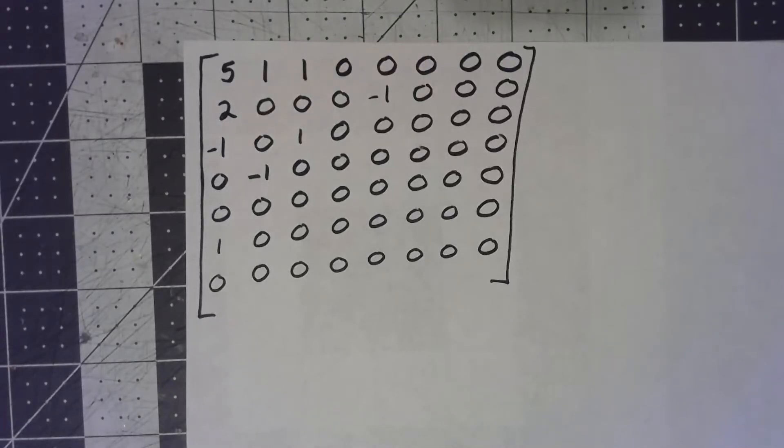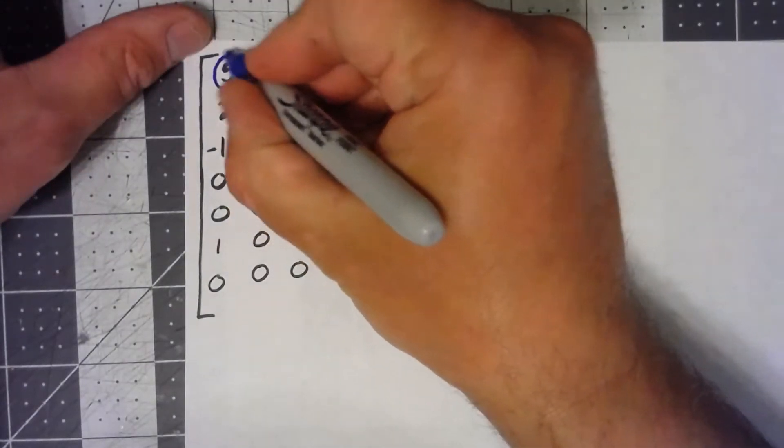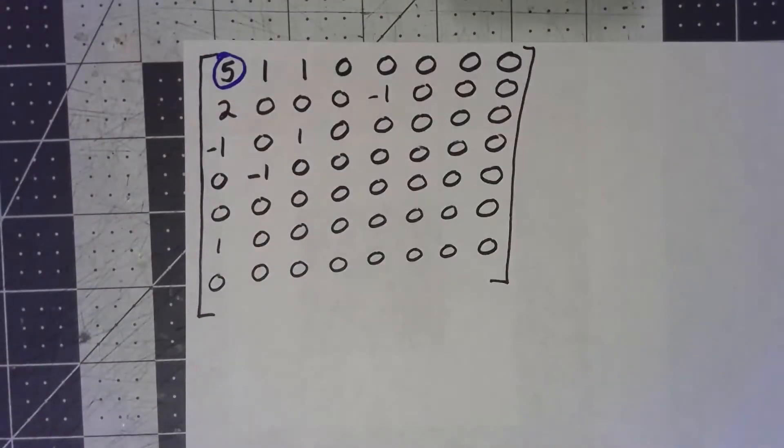In the last video, I talked about how to store the DC component, this upper left entry. So the next question is, how do I store the rest of the matrix, what we call the AC components?